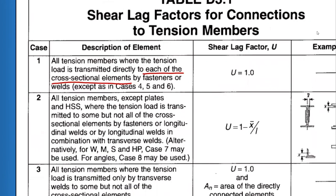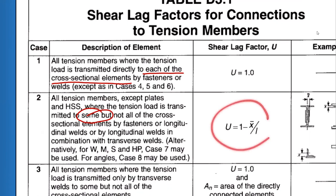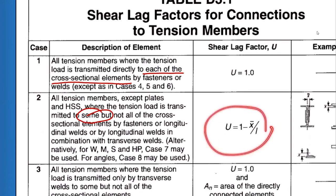When we do not qualify for case one, we automatically qualify for case two, except for plates and HSS. Case two applies to all tension members except plates and HSS where the tension load is transmitted to some — not all — elements. For example, if the web only of a C-shape is connected, or only one leg of an L-shape is connected, it falls under case two, which uses a formula we will discuss in detail shortly.